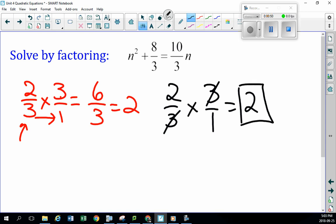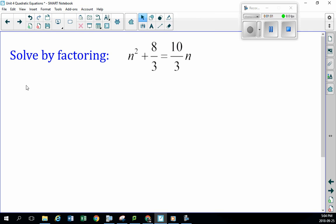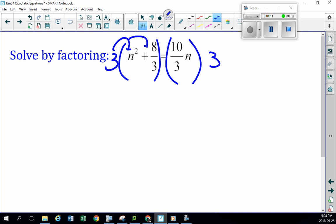So using that idea of the common denominator, which happens to be three in this case, we're going to multiply both sides of this polynomial now. Both sides of this polynomial, we're going to multiply it by three. So I'm going to multiply this side by three, and I'm going to multiply this side by three. Check out what happens. We distribute this three over here and over here. This gives you 3n squared because three times n squared is just 3n squared.